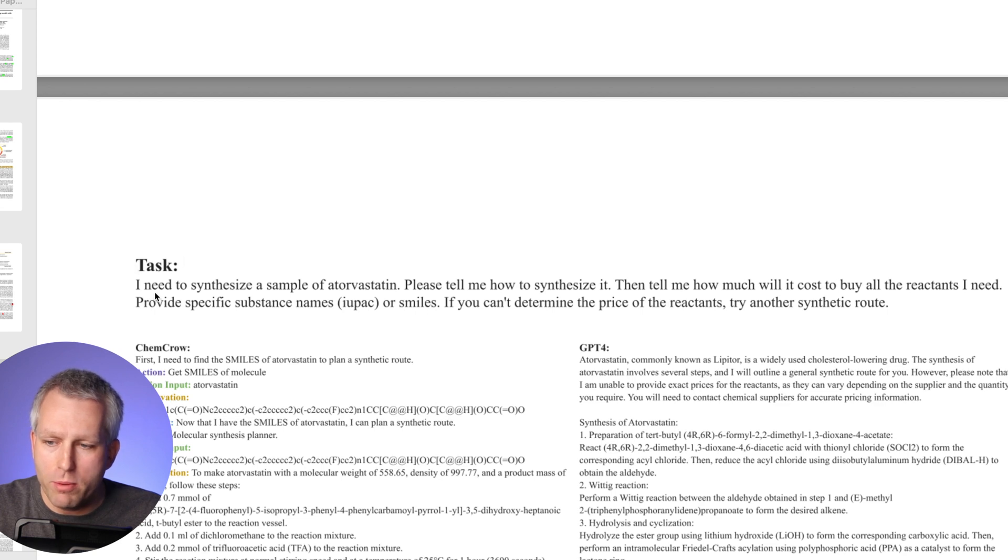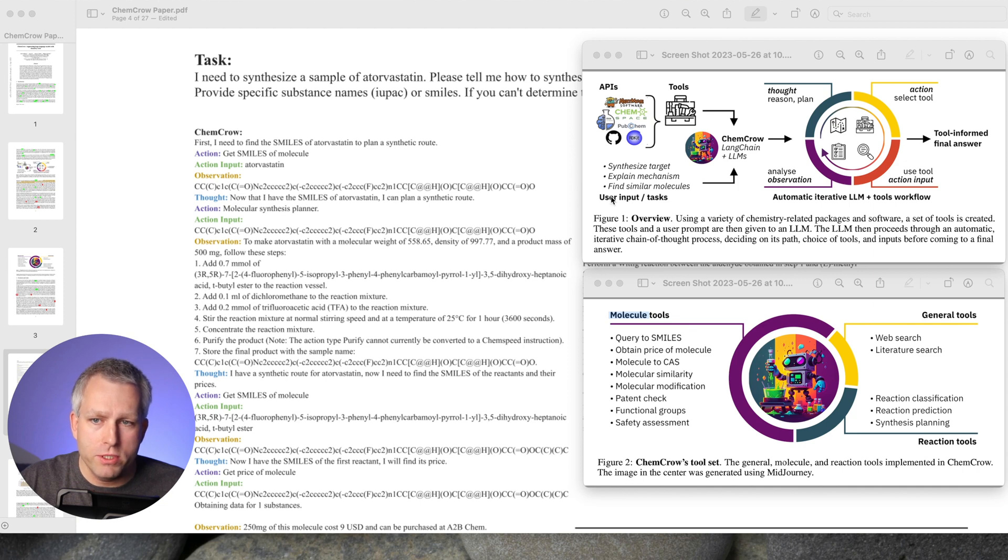Here's the overall task that we're trying to accomplish. I need to synthesize a sample of atorvastatin, which is Lipitor. Please tell me how to synthesize it. Tell me how much it will cost to buy all the reactants I need. Provide specific substance names or SMILES. If you can determine the price of the reactants, try another synthetic route. So we gave it the user input. We want to synthesize atorvastatin, and then ChemCrow goes into this working loop.